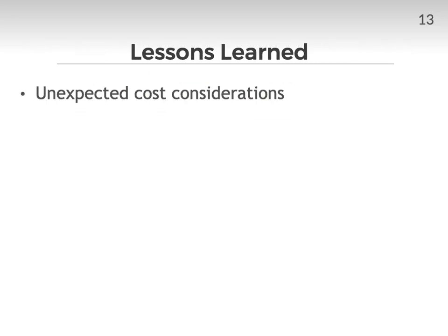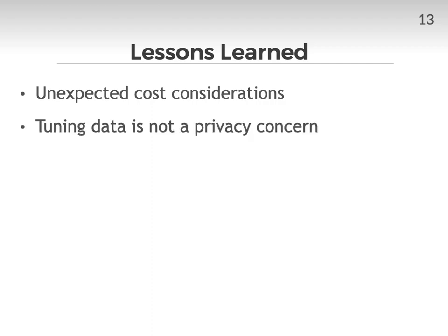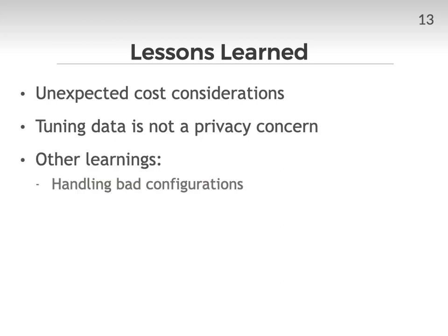For the remainder of this talk, I'm going to discuss some of the important lessons we learned while conducting this study. Foremost is that there were unexpected cost considerations. Although the performance gains achieved by the ML algorithms are noteworthy, there was a trade-off between how long it took to deploy Autotune versus the benefit. For example, cloning the production database and capturing the workload trace took over two months due to scheduling and requesting permissions and resources. There are several non-obvious factors one must consider, like the economic significance of the applications an organization wishes to tune, and the tooling and infrastructure available to run the tuning sessions. We also learned that the tuning data we collected was not a privacy concern — the bank was able to share the knob and metric data with us, even in light of GDPR restrictions. We had other learnings too, such as handling bad configurations, which I will describe now in more detail.